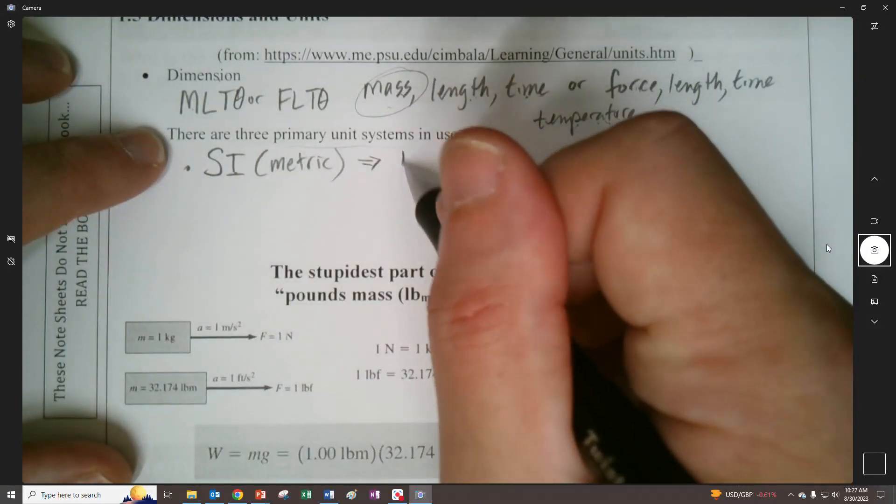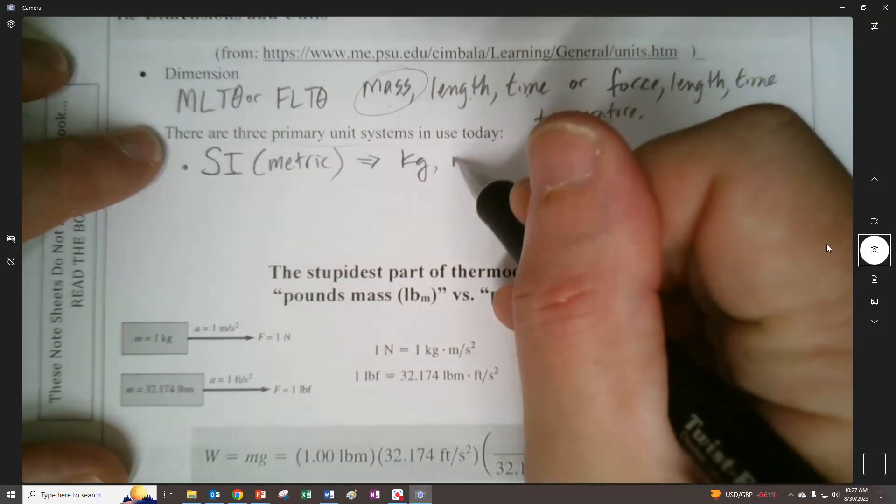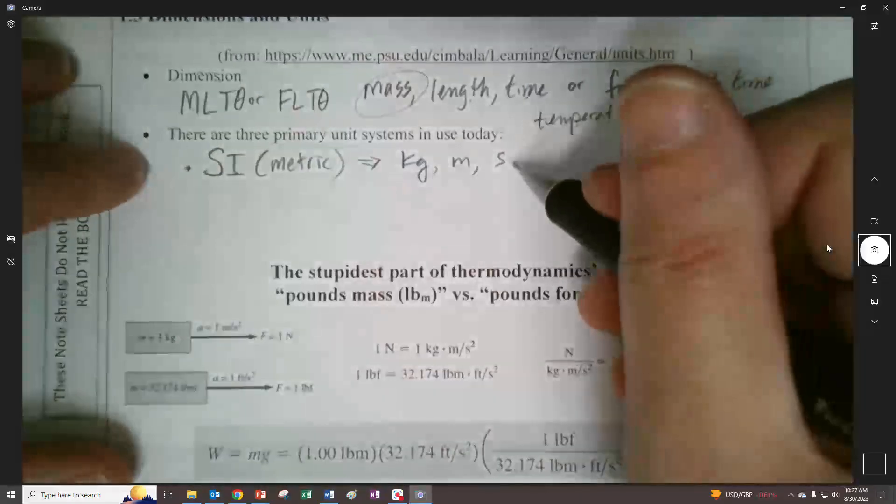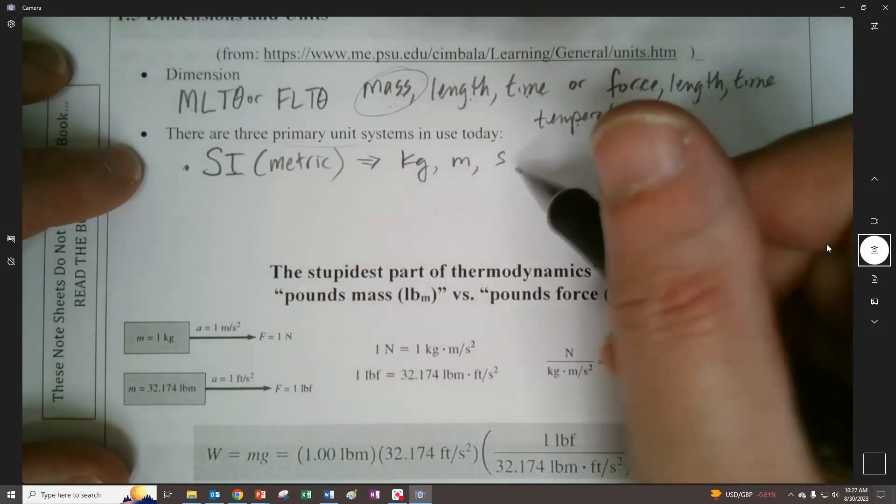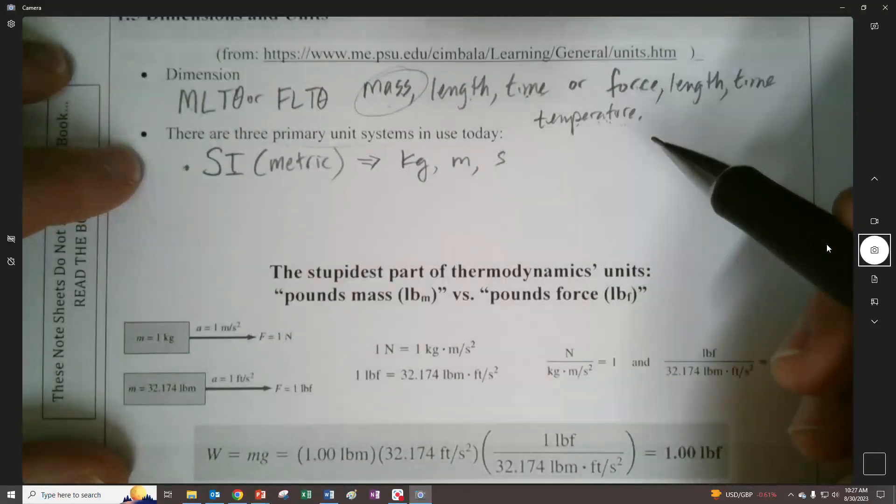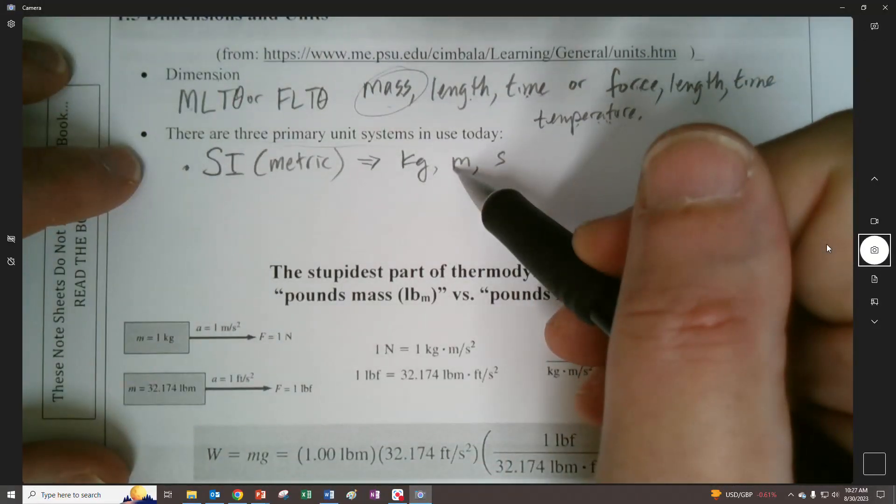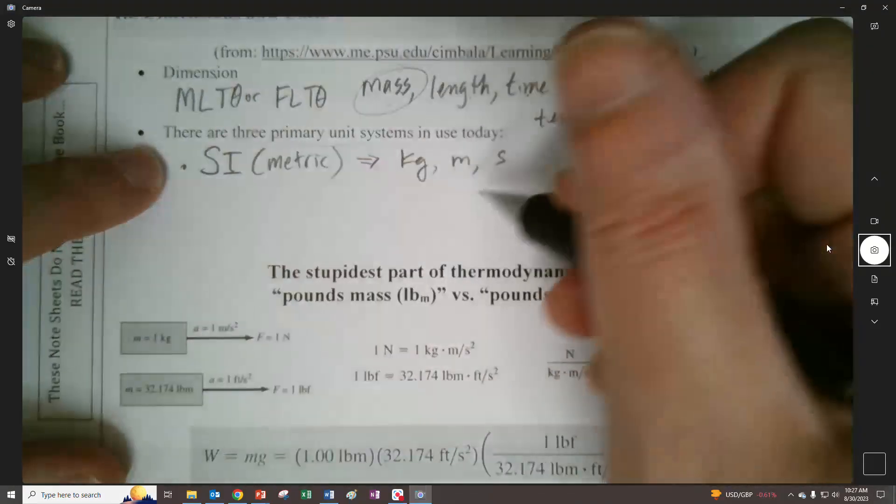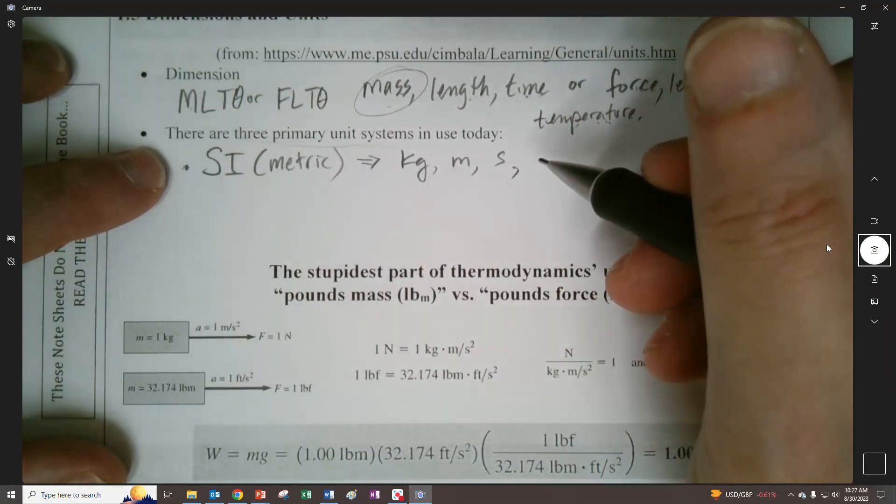The mass is kilograms. The length is meters. The time is seconds, which doesn't change between systems. We could also use hours, kilometers, or grams. But these are the primary ones that we use for calculation in this class.